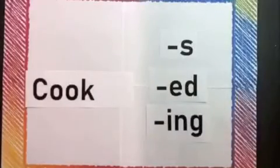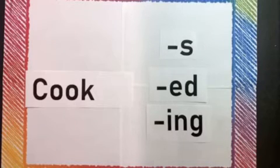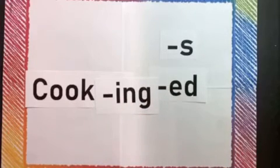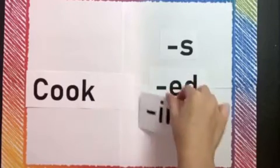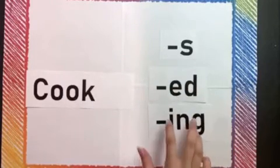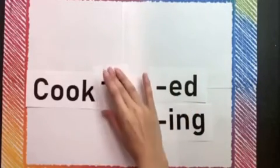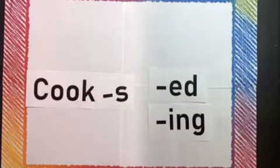First word is cook. What ending do we need to add if we want to make cook present tense? We add ING. Adding ING is making it present tense, so now we have cooking. Now what if I ask you to make it plural? What ending would we need now? S is right, friends — cooks. Now we have cook in plural form.